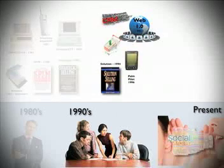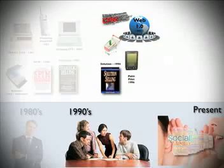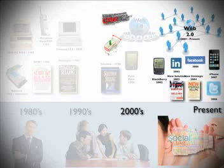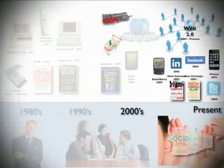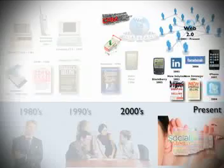And then lastly, the web happened. Now we're able to do email in real-time, and now we're able to do social networks. So you can see that the history has included relationship selling, solution selling, CRM-based selling, and now we're into social selling.